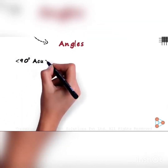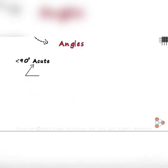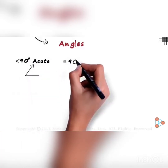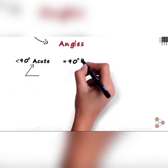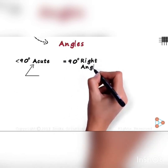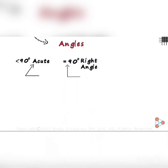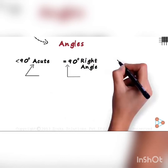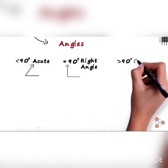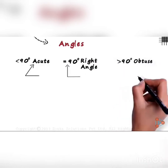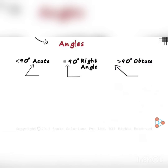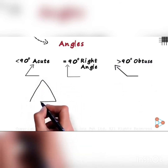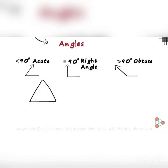Angles which are less than 90 degrees are called acute angles. This is an example of an acute angle. Angles which are equal to 90 degrees are called right angles. And angles which are greater than 90 degrees are called obtuse angles.